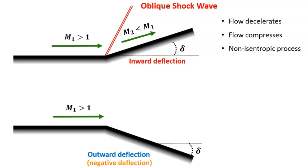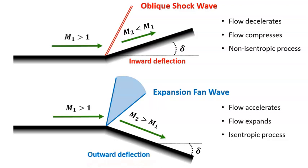In that case, this supersonic flow will produce what's called an expansion fan. Across the fan, the flow will accelerate and expand. This process is isentropic.